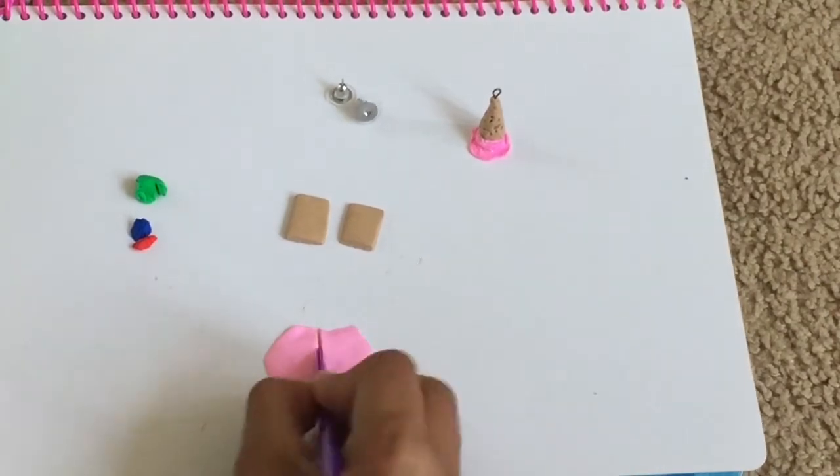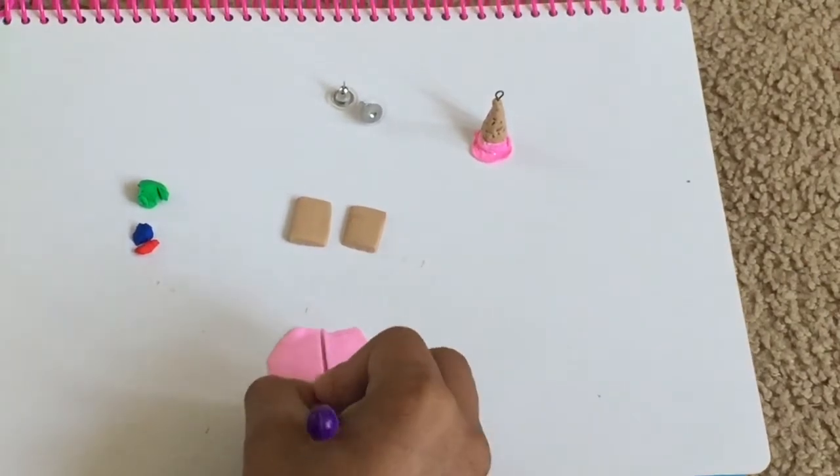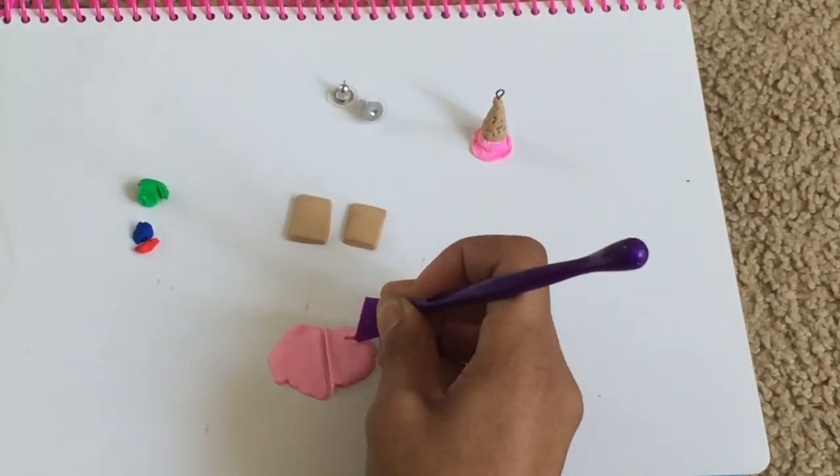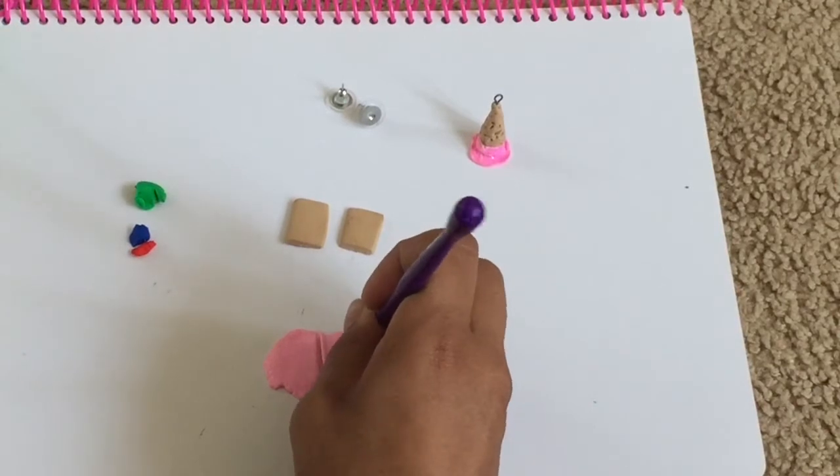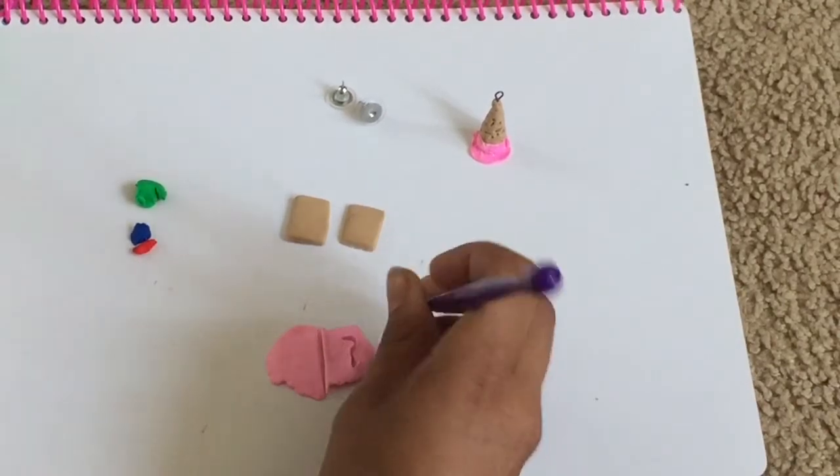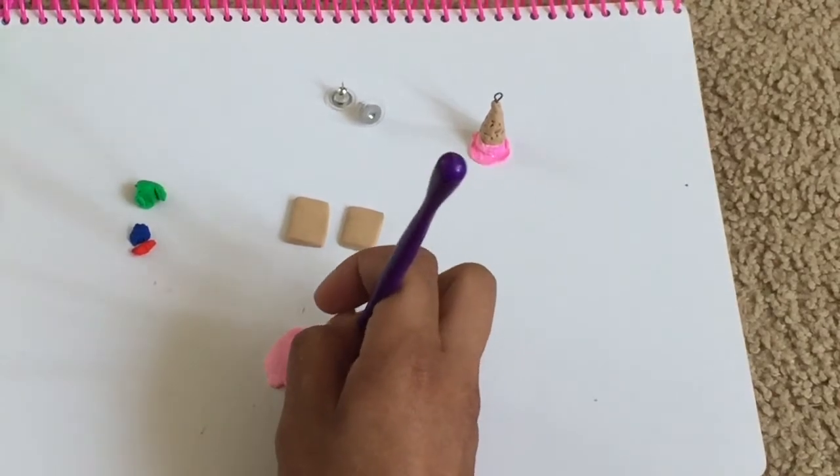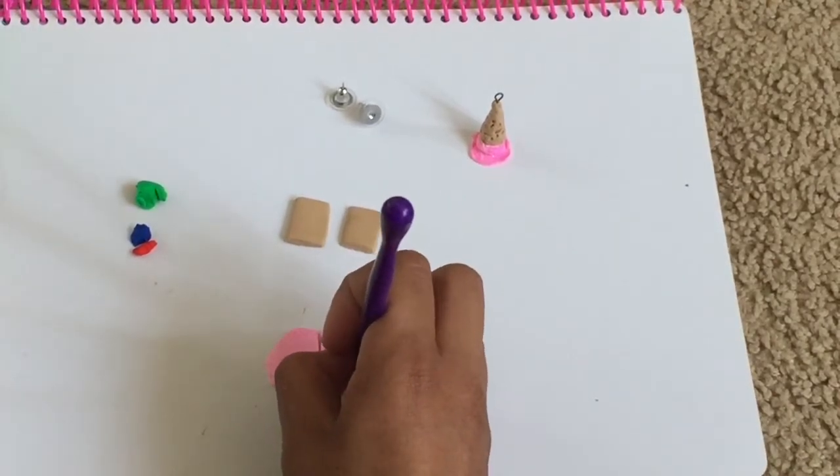There you go, two. Now you're gonna grab your pink and split in half because one side is gonna be for that frosting on that side and the other side is gonna be for that side. So you're just gonna cut out this little squiggly line of the frosting and then you're gonna attach it onto the pop tart.